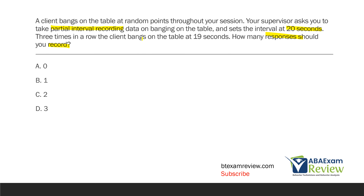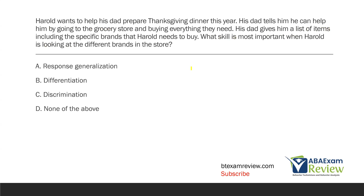So if our interval is at 20 seconds and three times in a row the client banged on the table at 19 seconds, did the behavior occur? It did. Did it occur every interval? It did — three times in a row, the client banged on the table at 19 seconds, meaning each interval, 19 seconds in, the client banged on the table. It's worded a little strange, but we got to the end of each interval and at 19 seconds they banged. So how many responses are you going to record? Three — because each interval, the behavior occurred, even if just for a split second. We record three total responses.